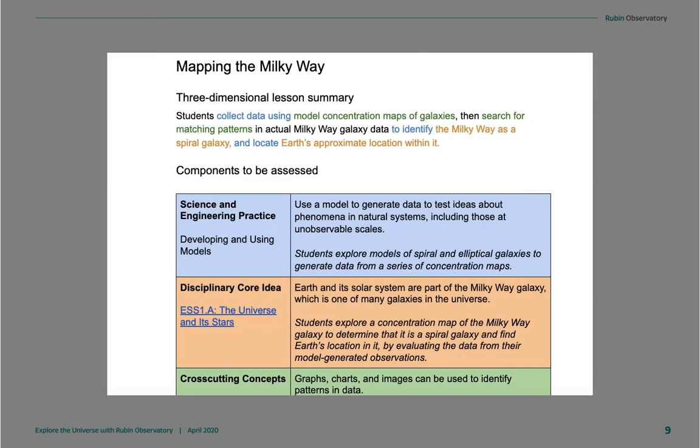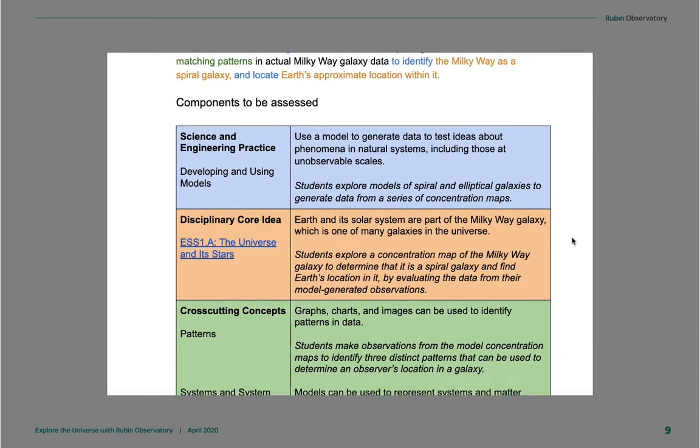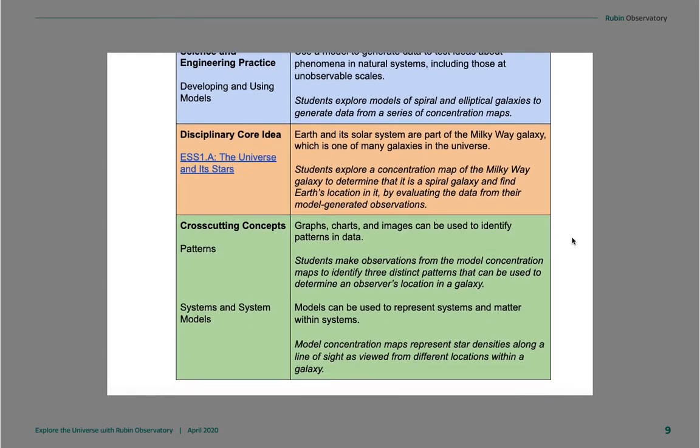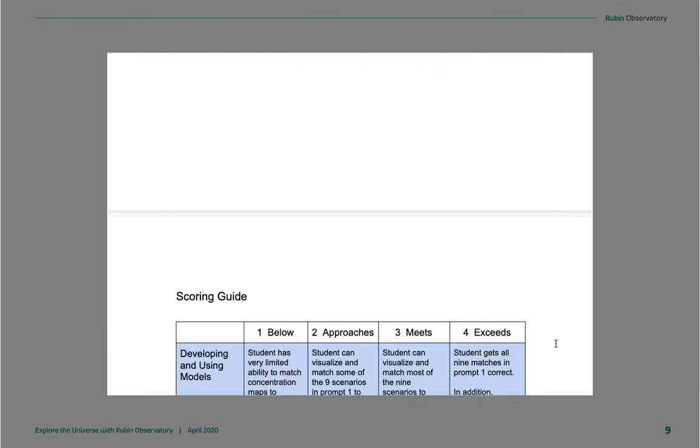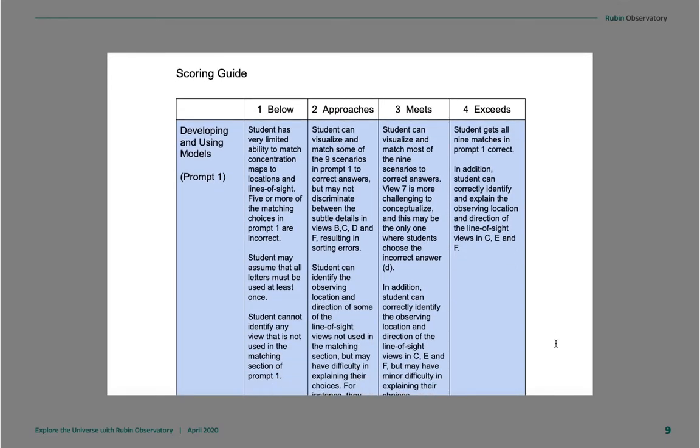Last, for those of you who are teaching with NGSS standards, we unpack the three-dimensional learning in each lesson, showing how we address science and engineering practices, the standards, and the cross-cutting concepts as this particular lesson evolves. Along with that, we have a summative assessment task. Here's the end of our Milky Way summative assessment task, and following the assessment, we have a very detailed student scoring guide with a rubric to help you assess how well the students are doing along their continuum of learning.